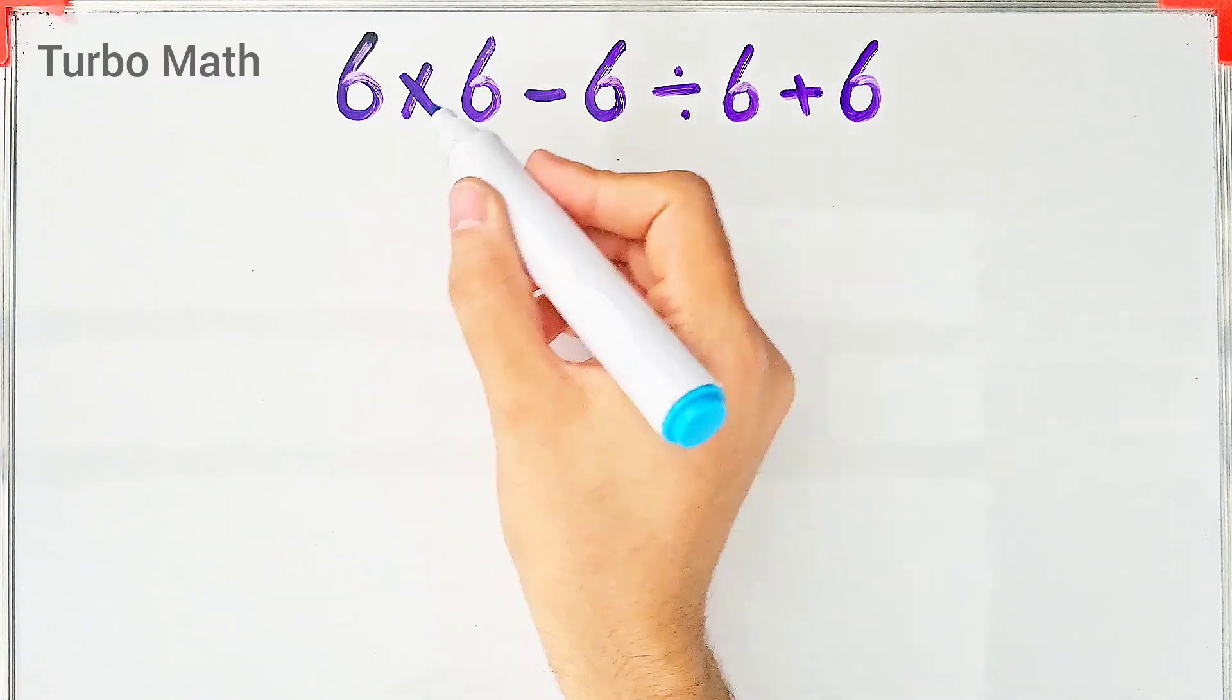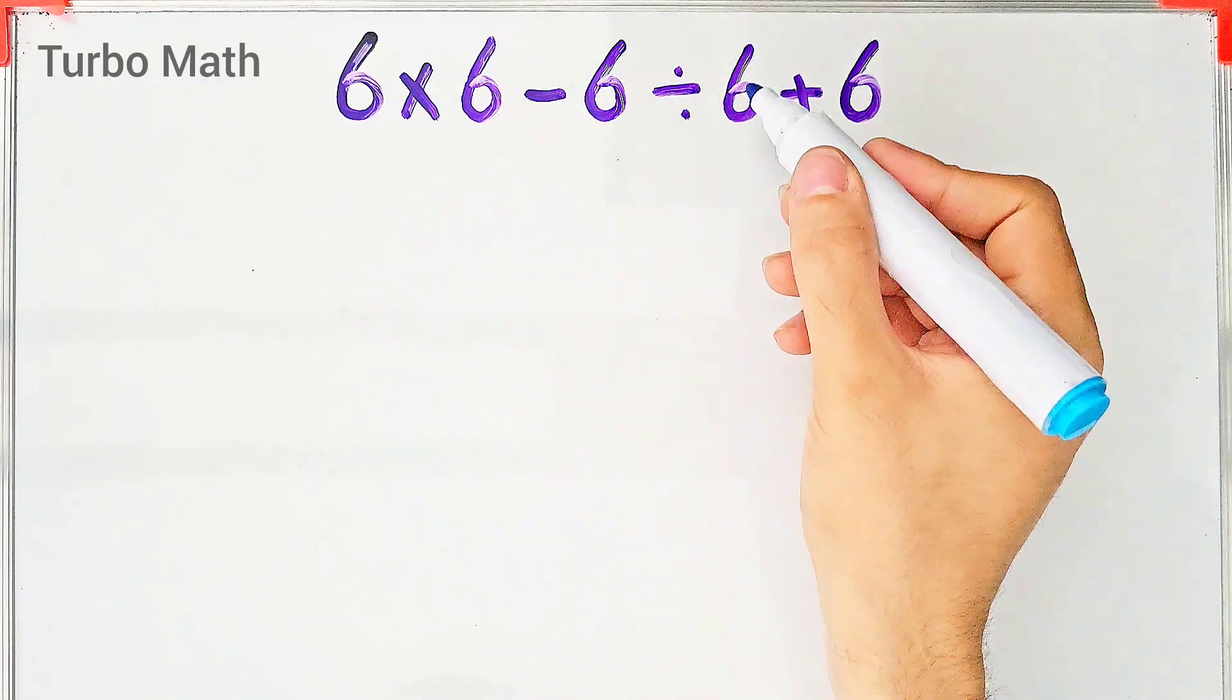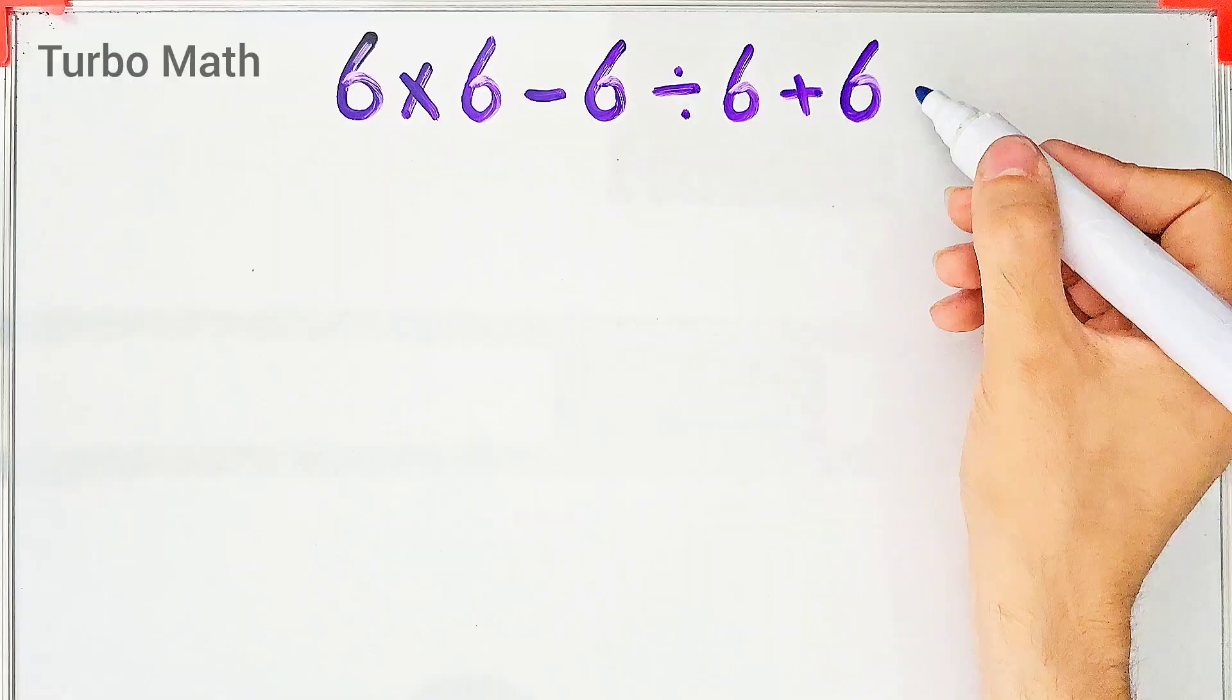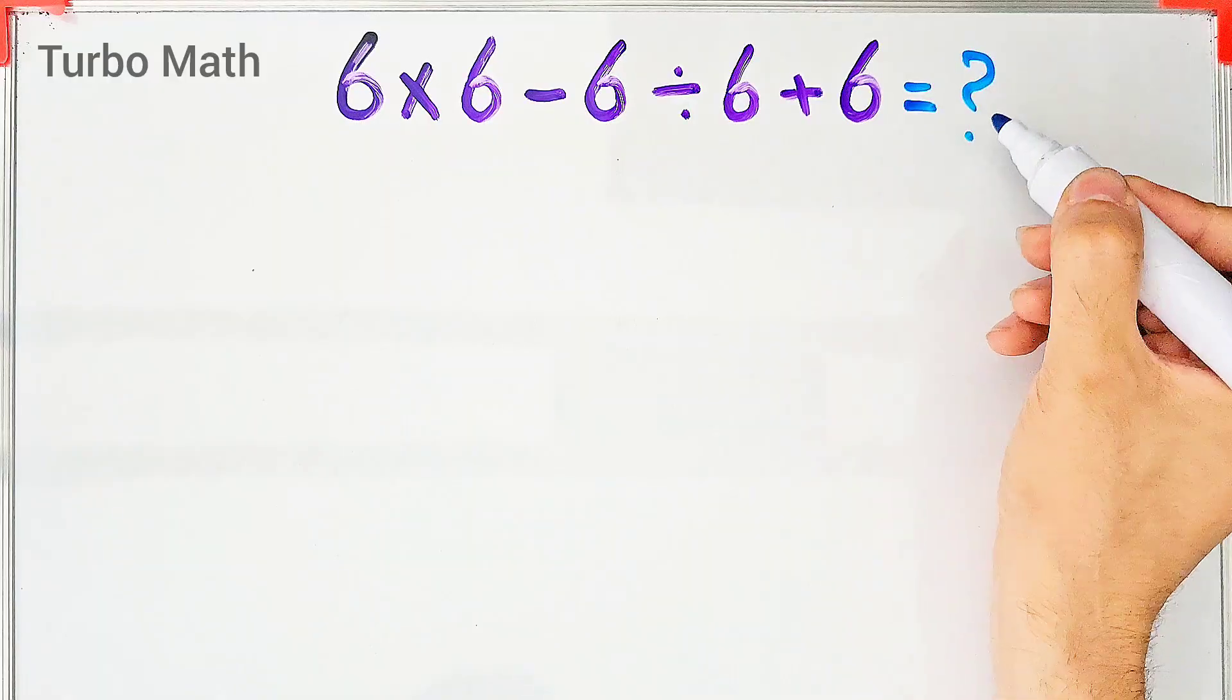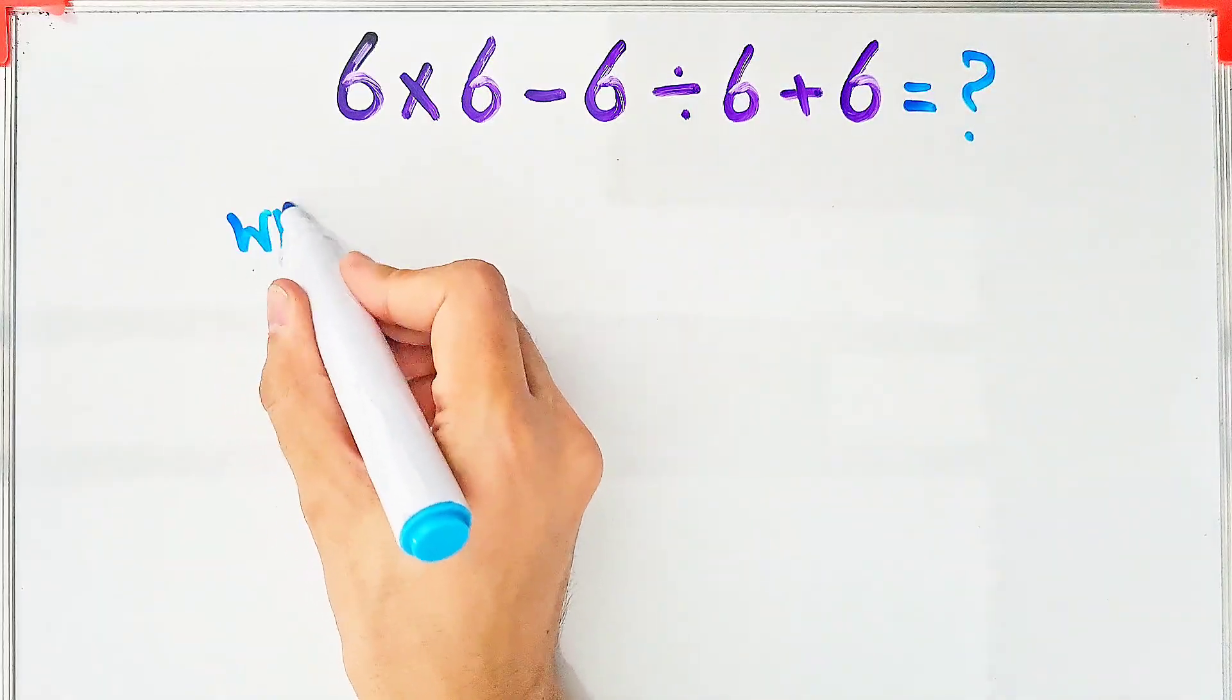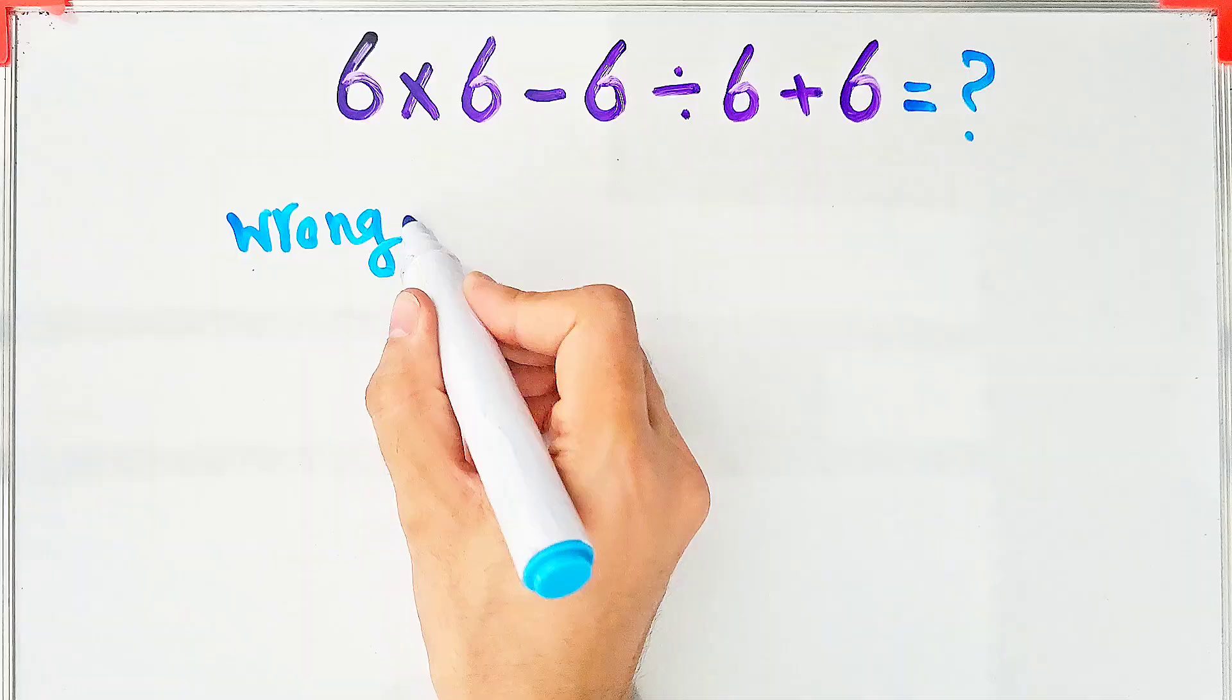What is the value of this expression: 6 times 6 minus 6 divided by 6 plus 6? Can you solve this question? In the wrong way of solving this question, some people start from the left and don't pay attention to the priority of the mathematical operations.